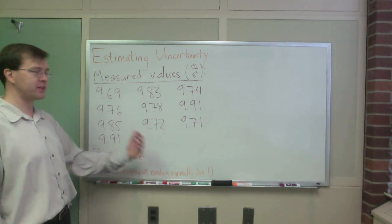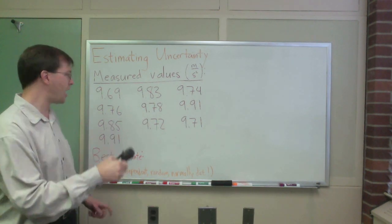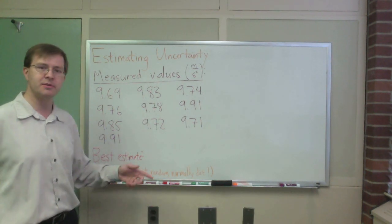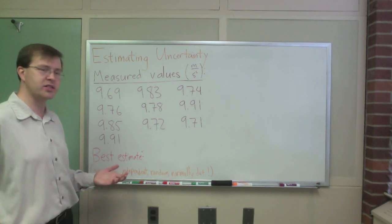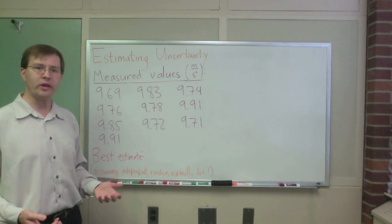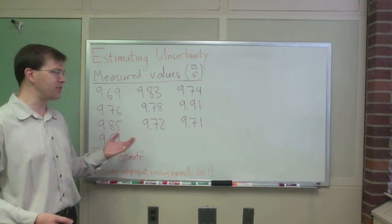In particular I'm going to pretend that I've taken my ACME gravitational field detection device and used it ten times to come up with these ten estimates, ten measurements of the Earth's gravitational acceleration, and I want to know what the best estimate for the actual gravitational acceleration of the Earth is given this data.